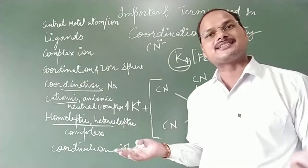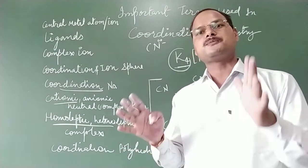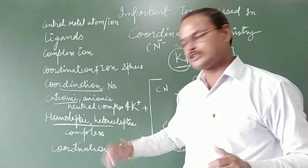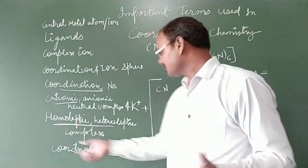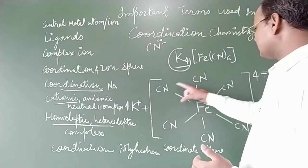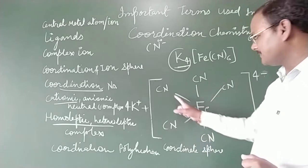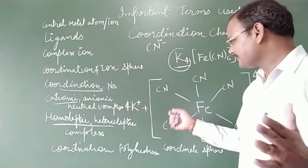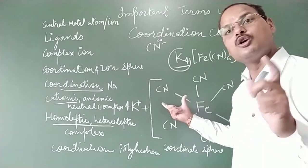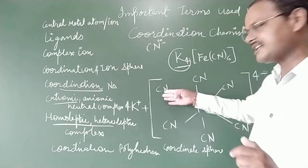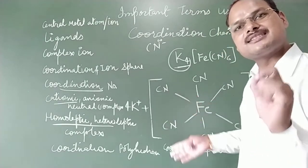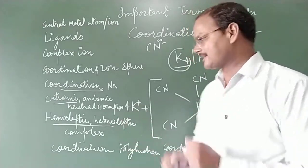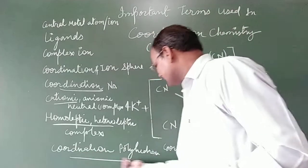The next terms are homoleptic and heteroleptic. When all the ligands attached to the central metal atom are of the same kind, the complex is known as homoleptic. Here all six CN⁻ ions are of the same kind, so this is a homoleptic complex. If different types of ligands are attached to the same central metal atom, then that complex is known as heteroleptic.